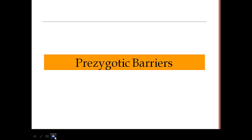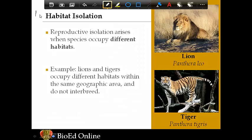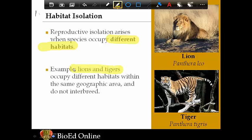Now we'll go through examples of prezygotic barriers — things that keep populations apart before that egg and sperm actually comes together. Number one is habitat isolation. Different groups of organisms can't reproduce with each other if they live in different habitats. The example here is lions and tigers: they usually do not interbreed in the wild, because they live in different habitats and don't run into each other normally. They are separated or isolated from each other based on their actual location.